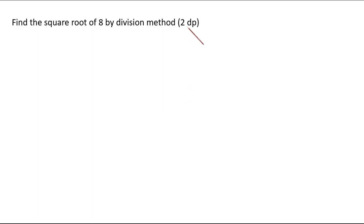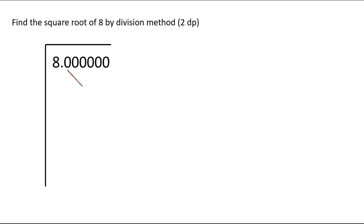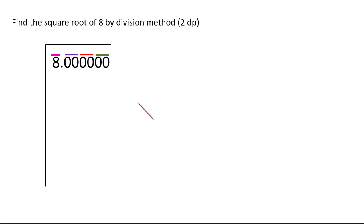Find the square root of 8 by the division method, with the answer to 2 decimal places. We know 8 is not a perfect square because 2²=4 and 3²=9, so the answer is between 2 and 3. Since we want 2 decimal places we also need the third decimal digit. So we write 8 as 8.000000, giving us three pairs of zeros after the decimal point to enable rounding.